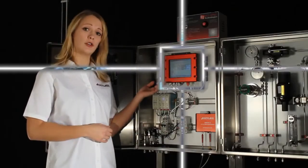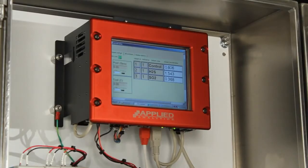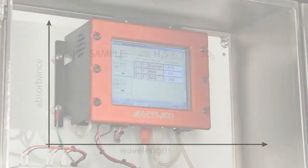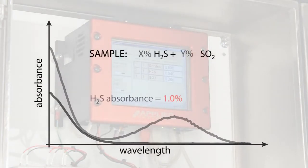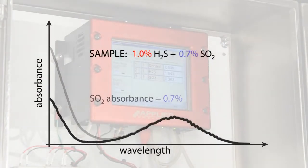The industrial controller interprets the data using AAI's proprietary software to recognize the distinct absorbent structures of hydrogen sulfide and sulfur dioxide in the sample spectrum.